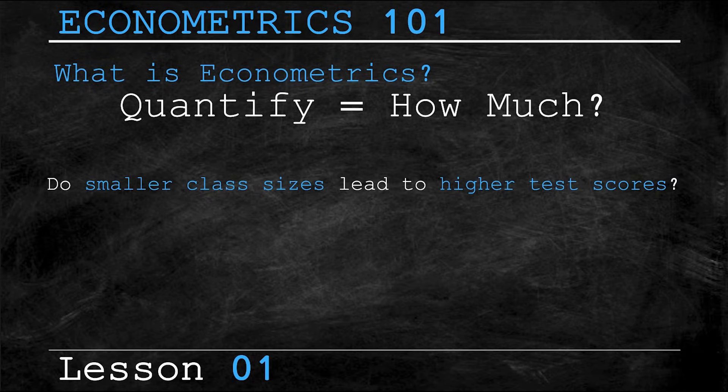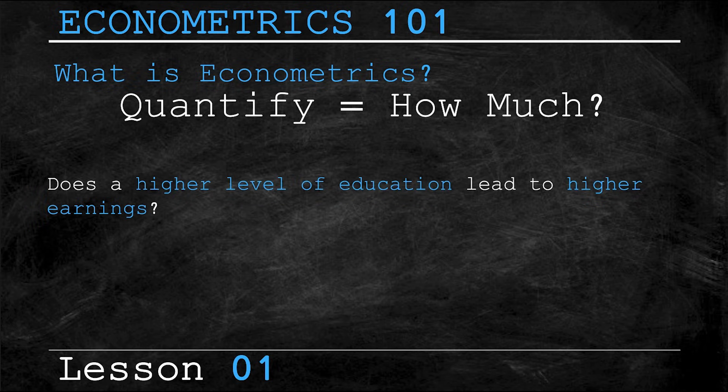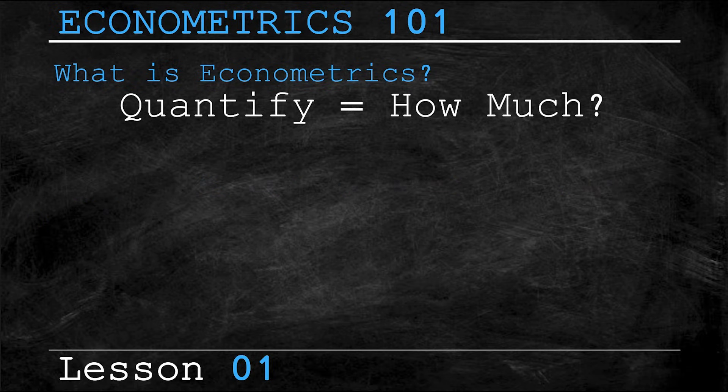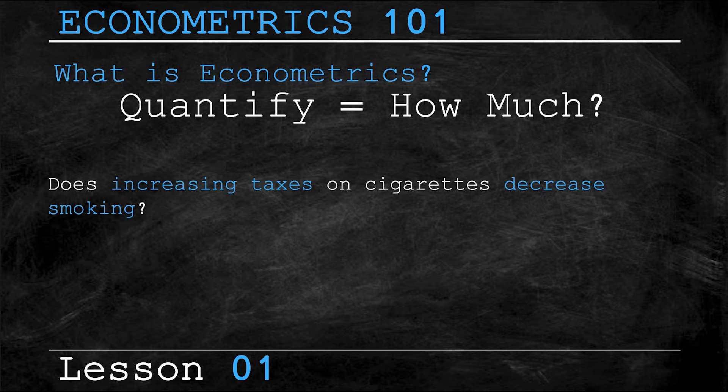There are arguments for and against smaller class sizes, but the goal of econometrics is to determine if there is a link between smaller class sizes and higher test scores, how much does one variable impact the other? For our second example, if there is a link between earnings and education, how much does one variable impact the other? And for our last example, if there is a link between taxes on cigarettes and their consumption, how much of an impact is there?